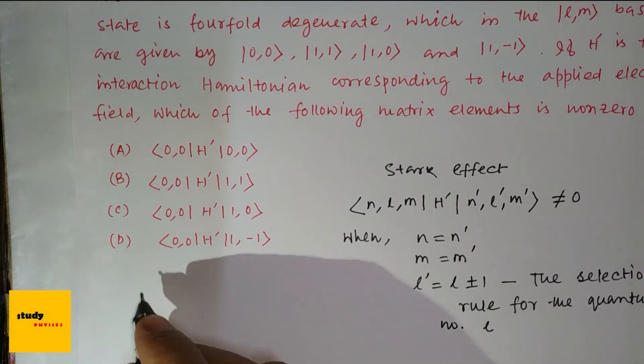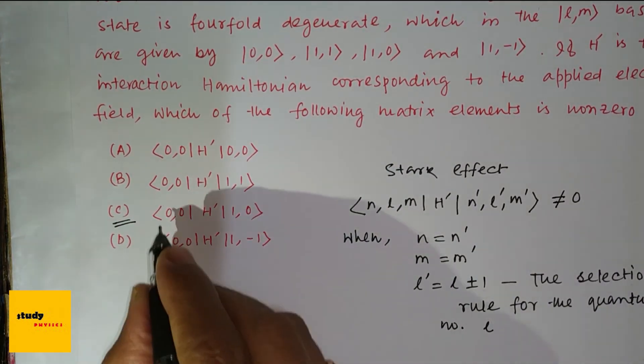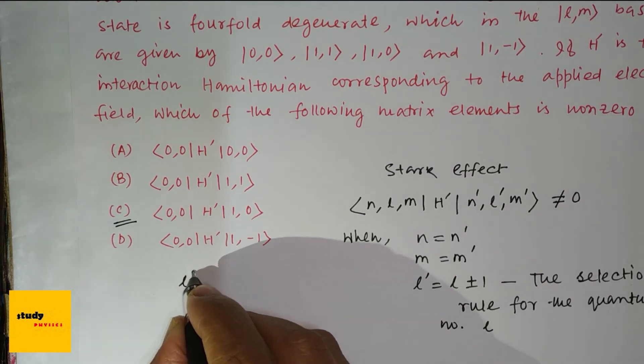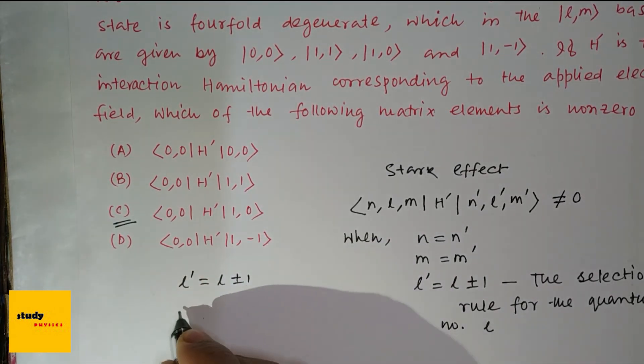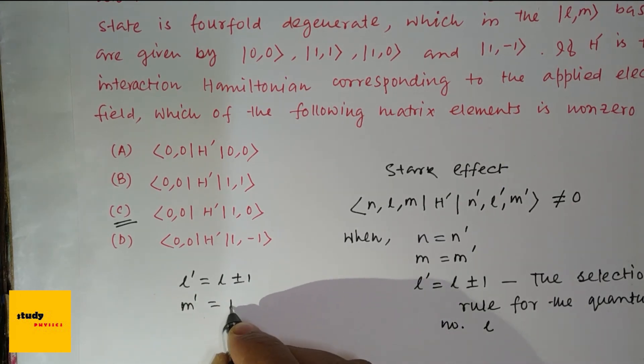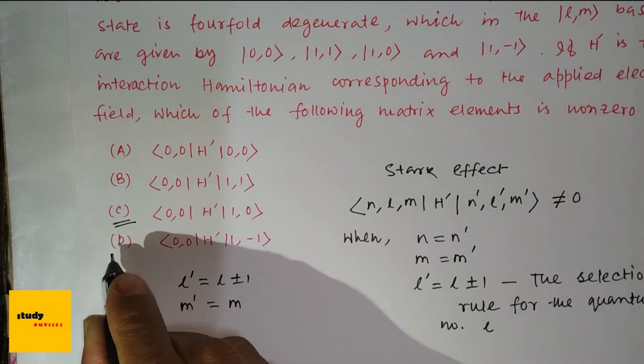So here's the option number C is correct because here L' equal to L plus minus 1 and M' equal to M. So the correct option is C.